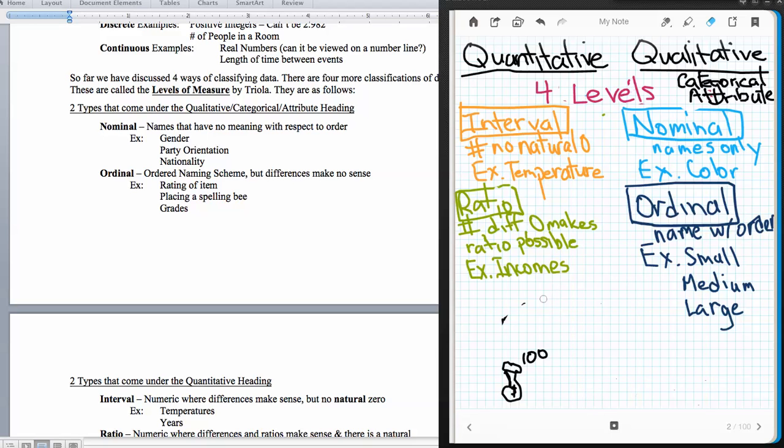Both nominal and ordinal data are levels of measure that are qualitative, categorical attribute data. Now we're going to talk about the quantitative types. Quantitative data is numbers, and these numbers actually do have meaning. The first type, these have a hierarchy to them. They get more detailed as they go up.